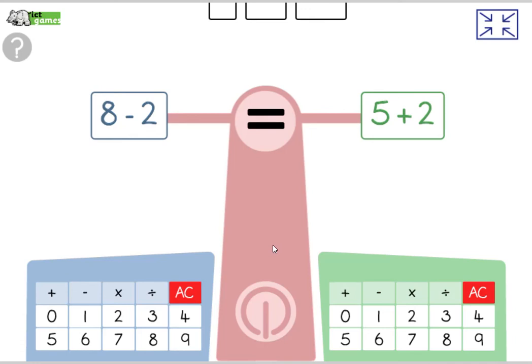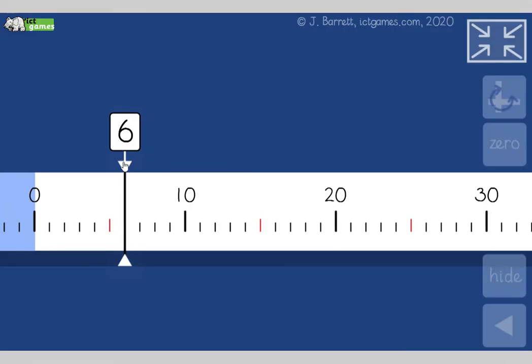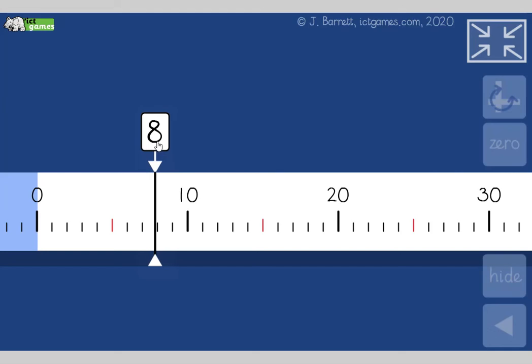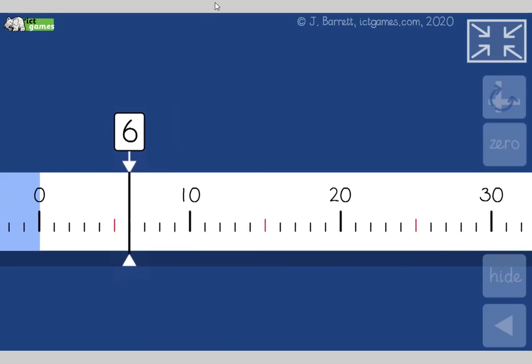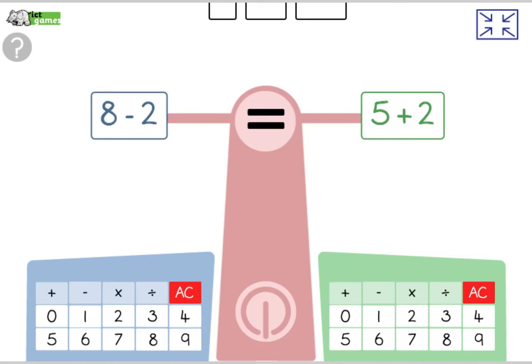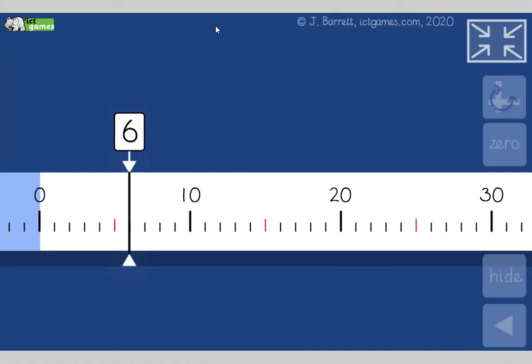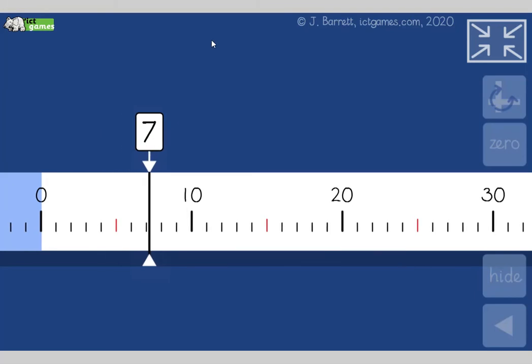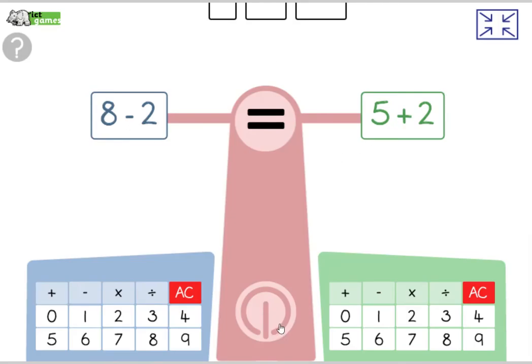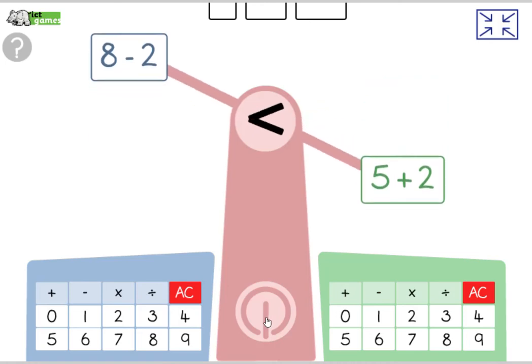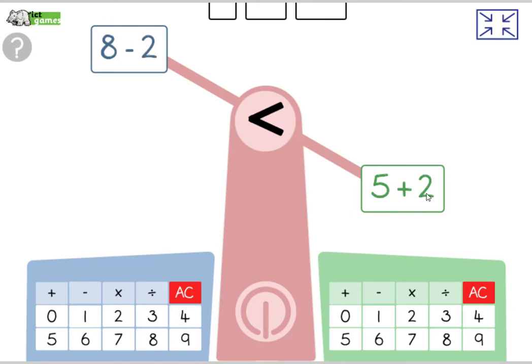Here's our scales, we've done this before. We've got 8 take away 2, and 5 add 2. I haven't switched it on yet, so which side is going to go down, which side has a higher value, which side is worth more? You might want to pause the video while you work out 8 take away 2, and 5 add 2. I'm going to have a look on a number line. Here's 8, if I take away 2, 1, 2, that gives me 6. And the other one is 5 add 2, here's 5 add 1, 2, that one's 7. So this one's worth 6, that one's worth 7, so which side is going to go down? Brilliant, so 8 take away 2 is less than 5 add 2.